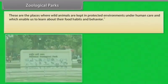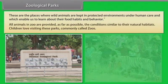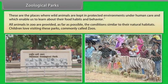Zoological parks are places where wild animals are kept in protected environments under human care, enabling us to learn about their food habits and behavior. All animals in a zoo are provided, as far as possible, conditions similar to their natural habitats. Children love visiting these parks, commonly called zoos.